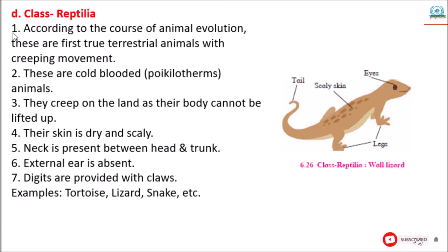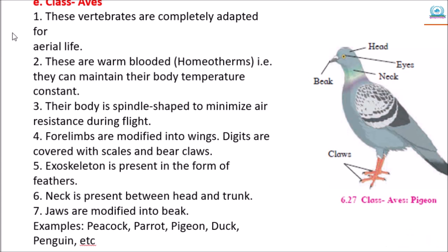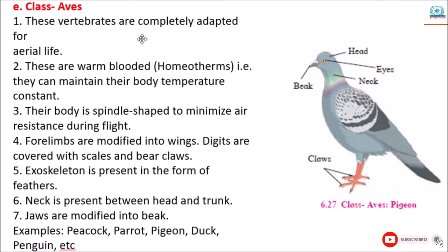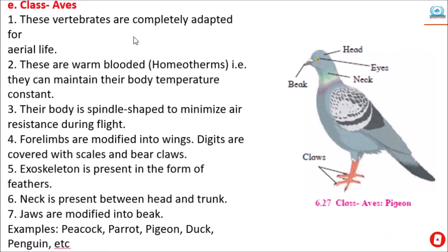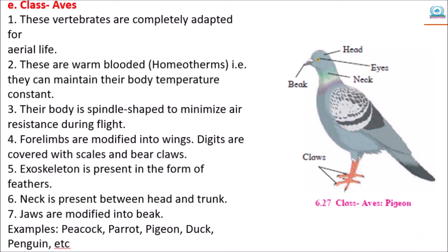The next class is Aves — all birds are included in this class. These vertebrates are completely adapted for aerial life. These are warm-blooded or homeotherms, meaning they can maintain their body temperature constant. Their body is spindle-shaped to minimize air resistance during flight. Forelimbs are modified into wings. Digits are covered with scales and bear claws. Exoskeleton is present in the form of feathers. Neck is present between head and trunk. Jaws are modified into a beak. Examples: peacock, parrot, pigeon, duck, penguin, etc.